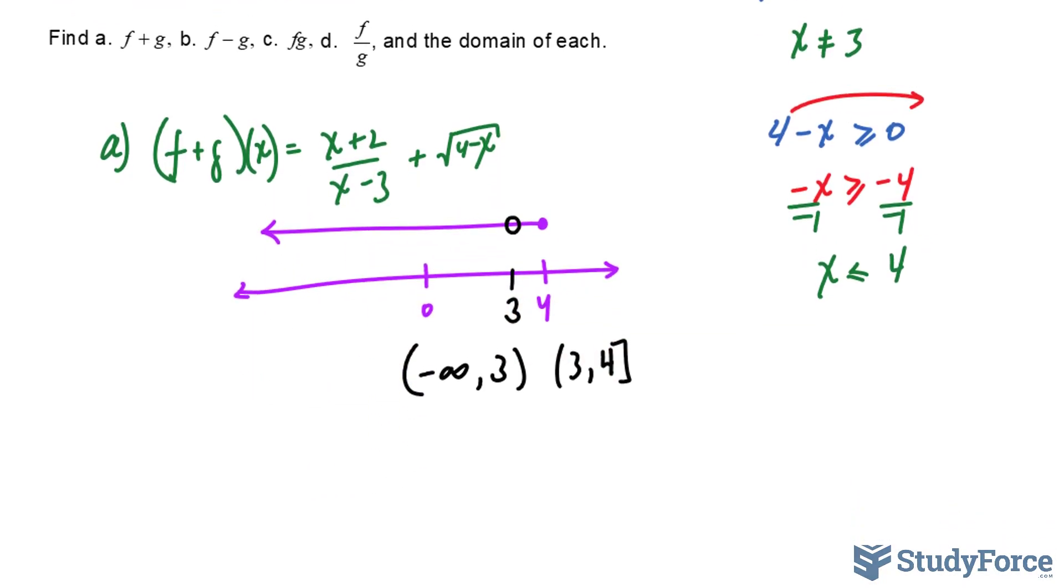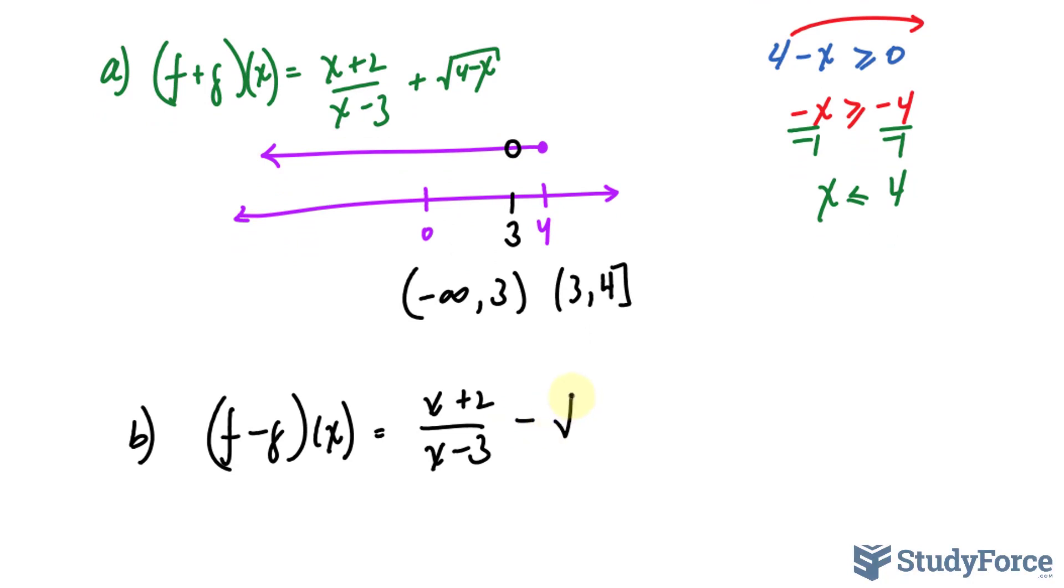Let's move on to B. For B, we subtract. So I'll write down f minus g. The same expression as before, except the only difference is that we're using minus instead of where we had plus before. The same conditions apply to A that apply to B. So the domain will be the same for this and for that.